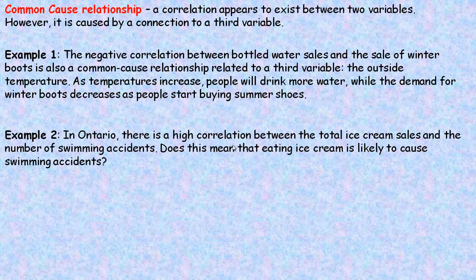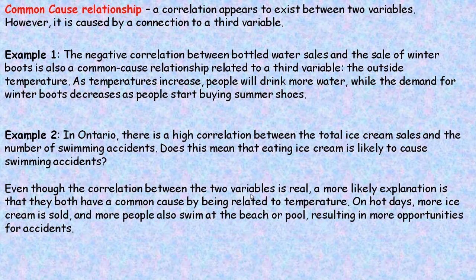Another example: in Ontario there's a high correlation between total ice cream sales and the number of swimming accidents. Does this mean that eating ice cream causes swimming accidents? No. Even though the correlation between the two variables is real, a more likely explanation is that they have a common cause linked to temperature. On hot days, more ice cream is sold, and more people swim, giving the opportunity for more swimming accidents. The ice cream isn't causing the accidents — it's the link to temperature.